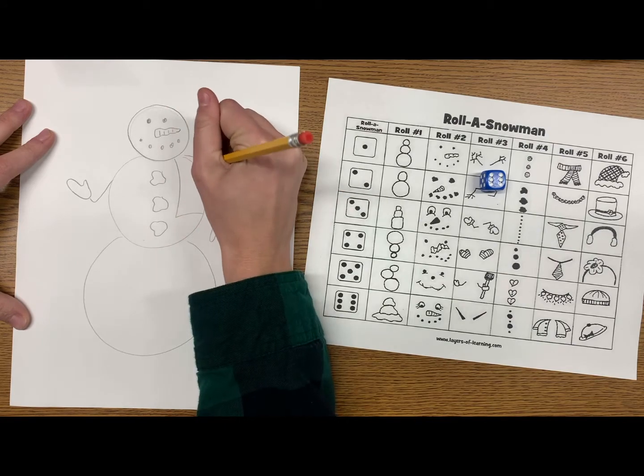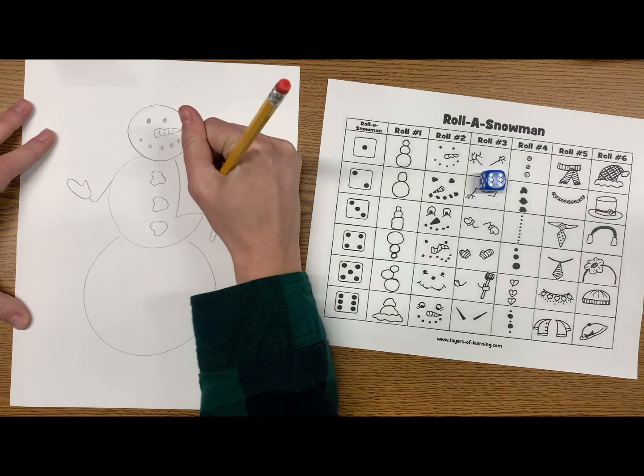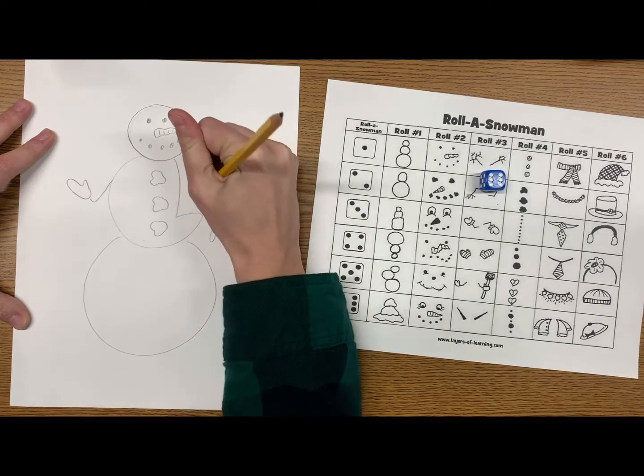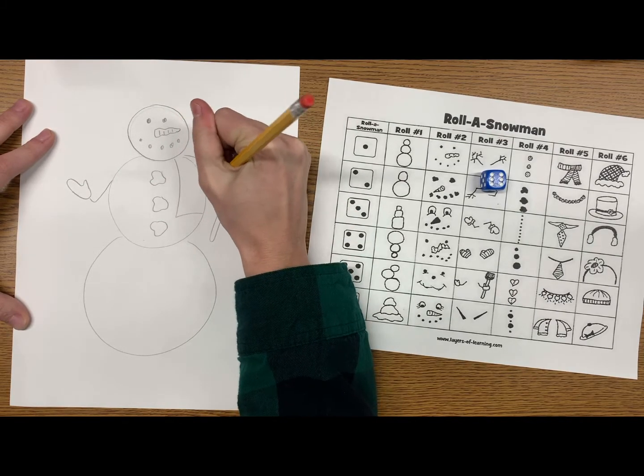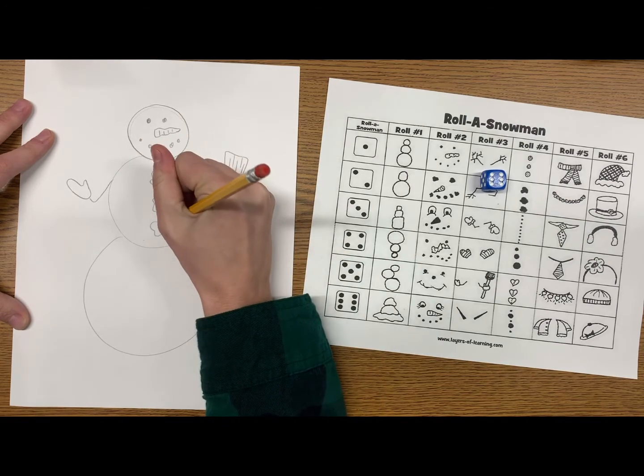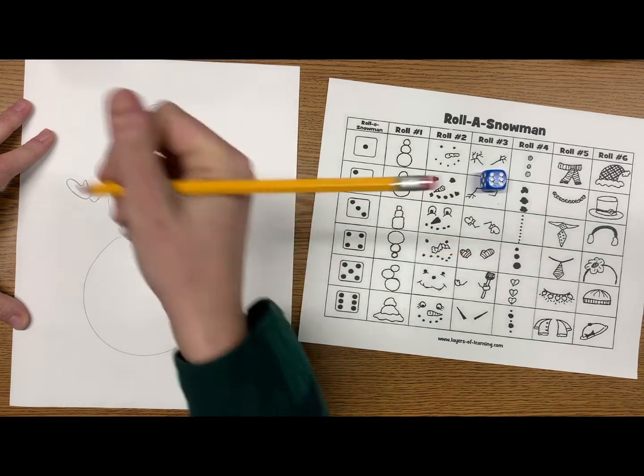And this is why I like to use pencils, because there are parts that I may have to go back and erase, like a part of this arm that is now covered by a sleeve that I can go back and erase. So that's why I like using a pencil or a dry erase marker to do this game.